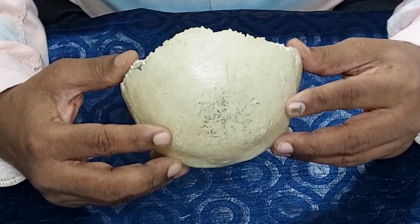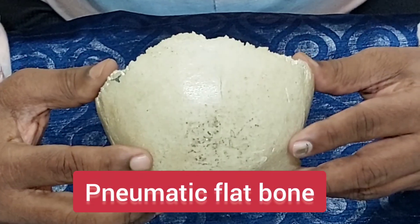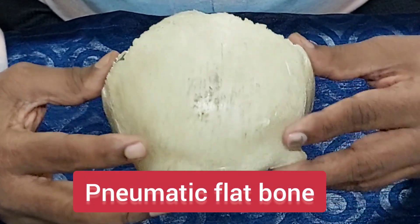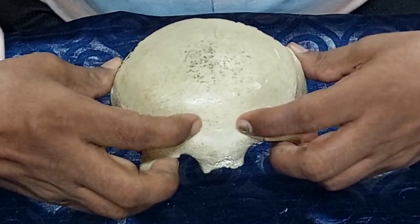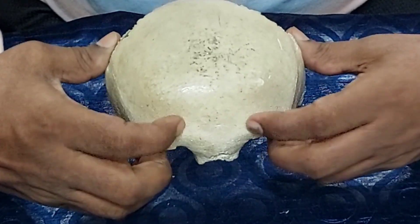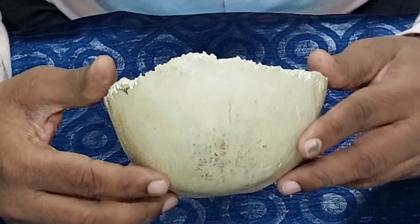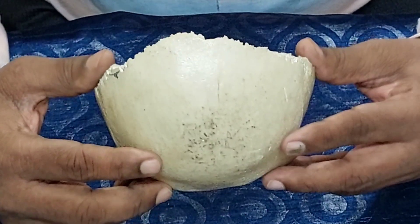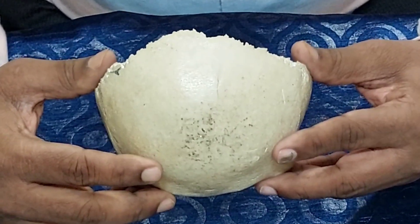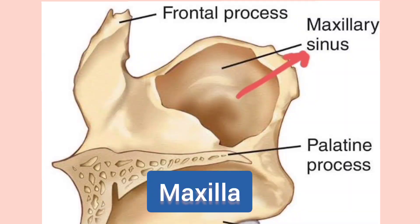This is the frontal bone. It is a pneumatic flat bone — 'pneumo' means air. This bone possesses an air sinus called the frontal air sinus, which is why it is called a pneumatic flat bone. Another example of a pneumatic bone is the maxilla or maxillary bone, which contains the maxillary air sinus.